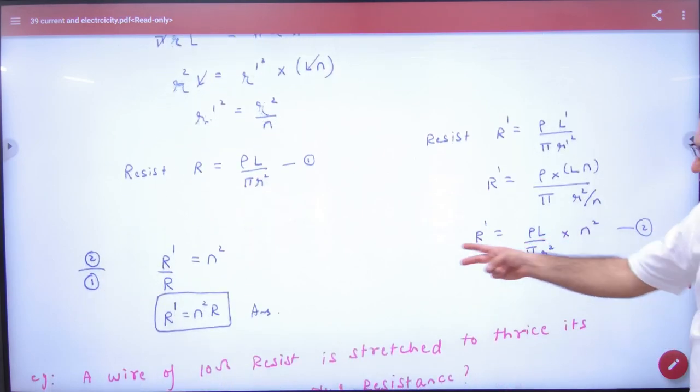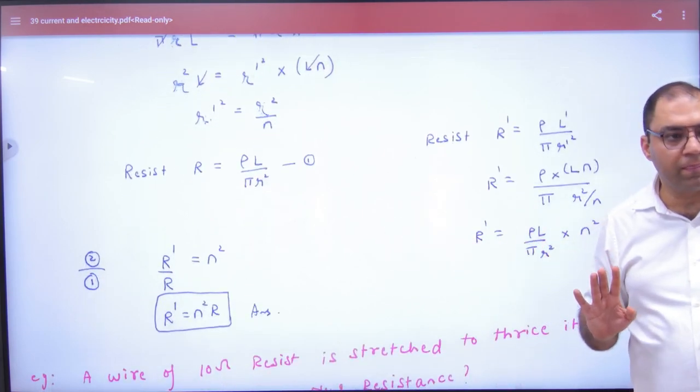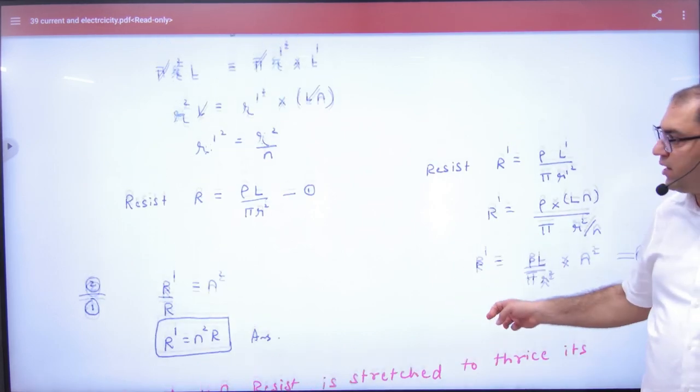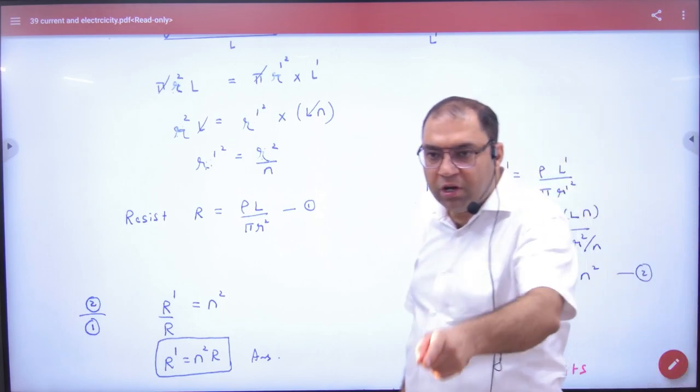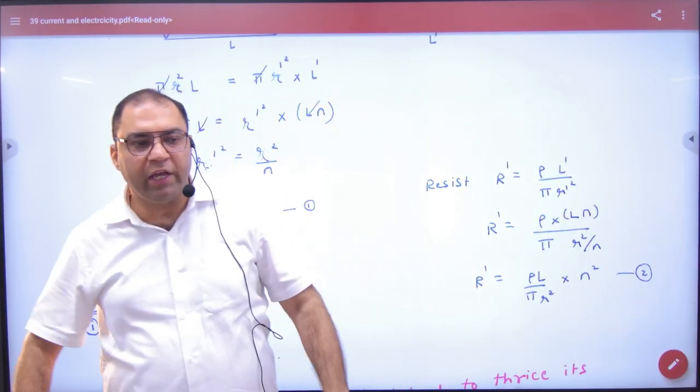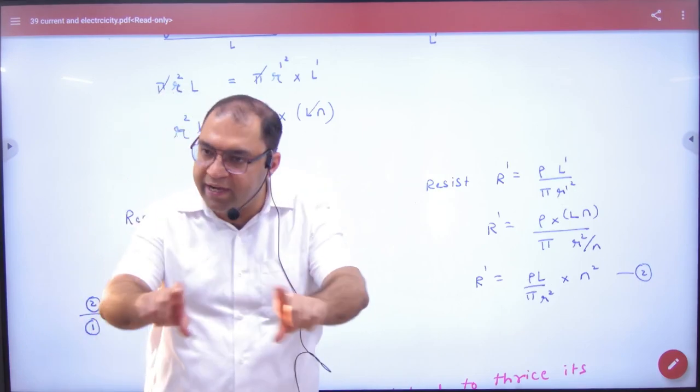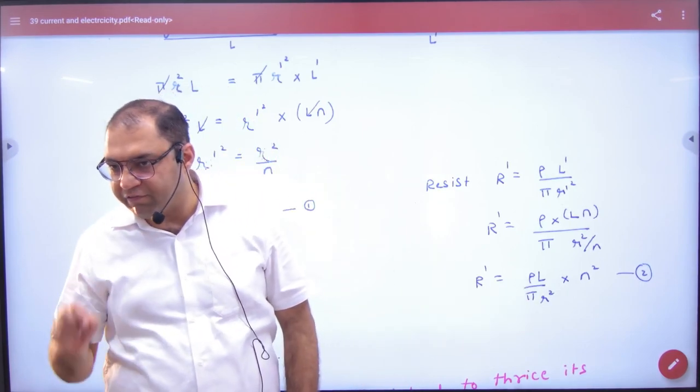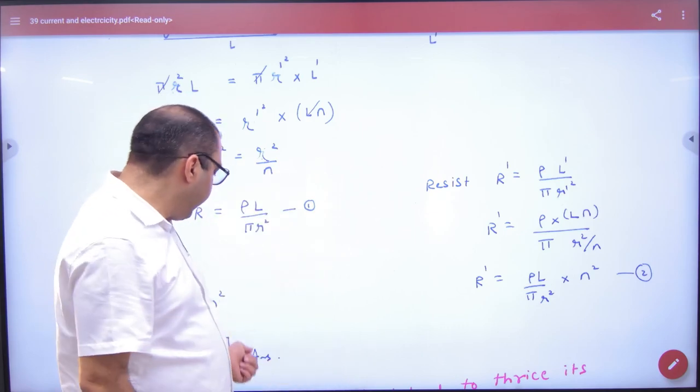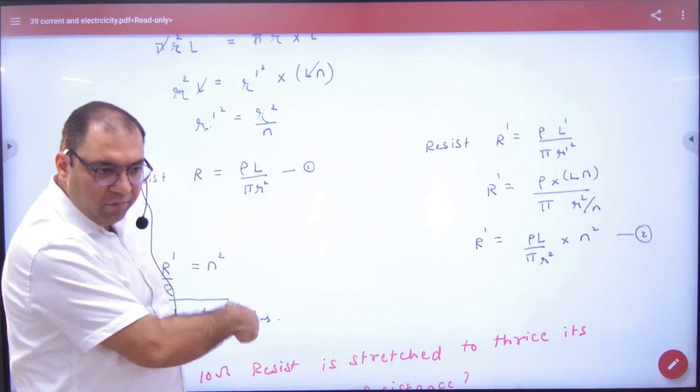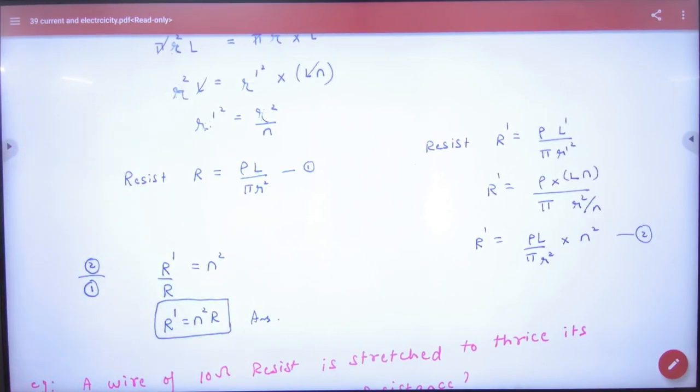So if you have two numbers in NCERT, then you have to prove it. And if there is an objective, then write the formula in the booklet. If a wire is stretched to n times its length, then resistance becomes n² into R. So note this formula, please. This is a very important formula. This formula will solve n² when you have to pull the wire.